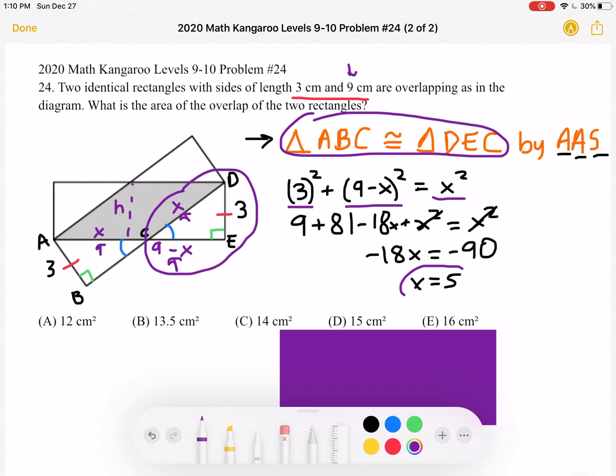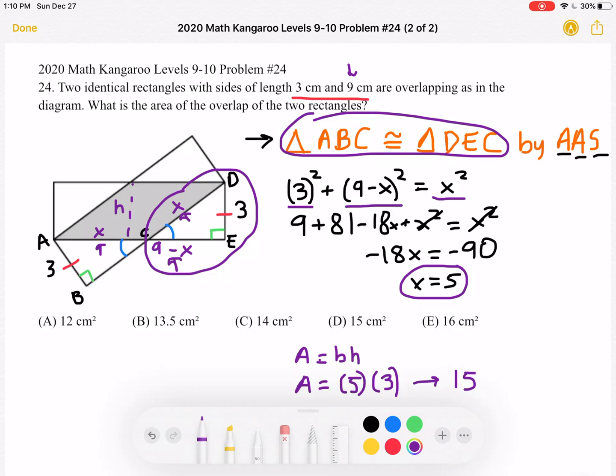So X must be equal to 5. And this is really important because the area of our parallelogram, because we have a parallelogram, is equal to base times height.